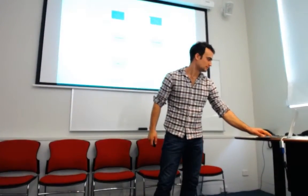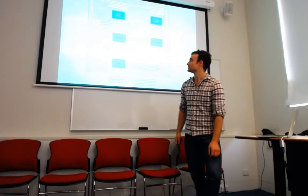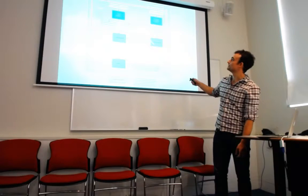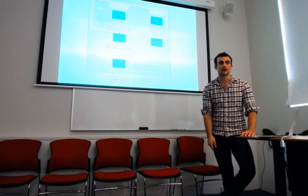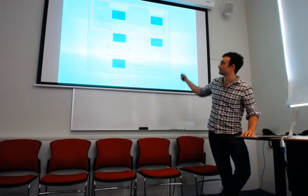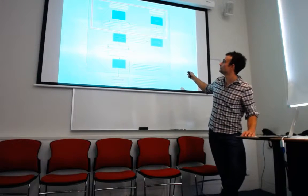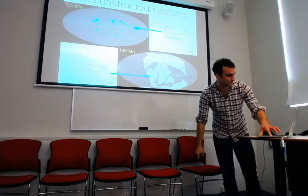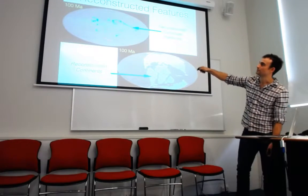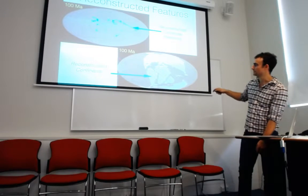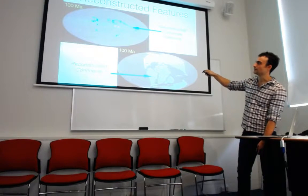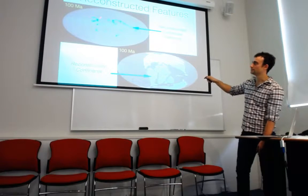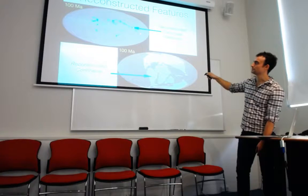The second PyGPlates script in our workflow is ReconstructFeatures. What it does is reconstruct our carbonate platforms and continents to the age specified at each loop iteration — 0, 2, or up to 400 Ma. So at the 100th iteration, the carbonate platforms and continents are reconstructed at 100 Ma, along with the subduction zones from the ResolveTopologies script.